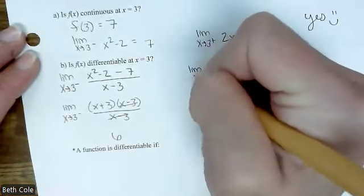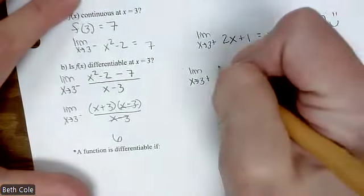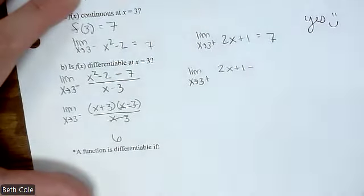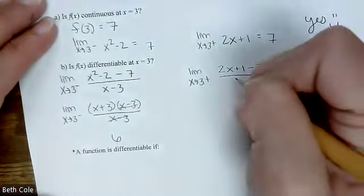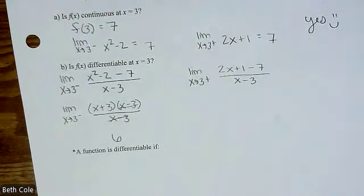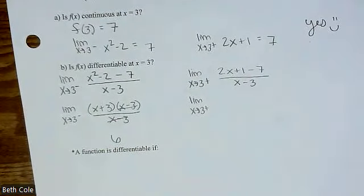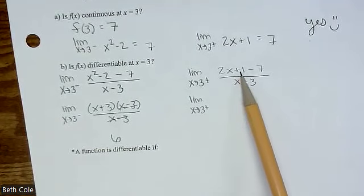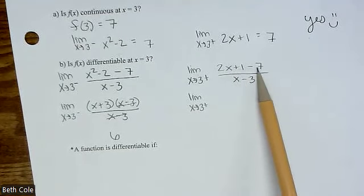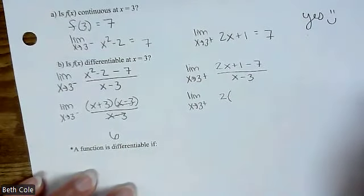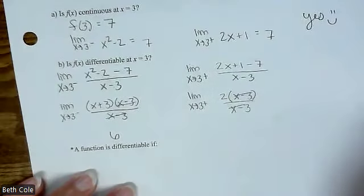Now we're going to do from the right: limit as x goes to 3 from the right. Which piece of the function do we use? The bottom one, 2x plus 1. That's the function minus 7, over x minus 3. You're going to have to factor. In the numerator we actually have 2x minus 6. Factor out a 2 — that leaves you with x minus 3. Those cancel and you get 2.